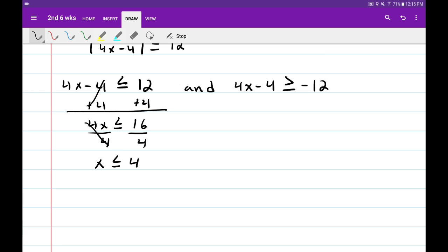Solve the other equation. Add four to both sides. We get 4x greater than or equal to negative eight. Divide by four. Get x greater than or equal to negative two.